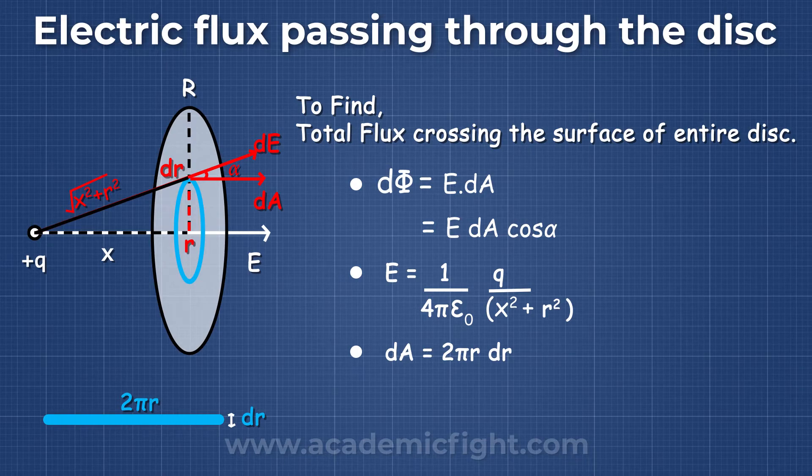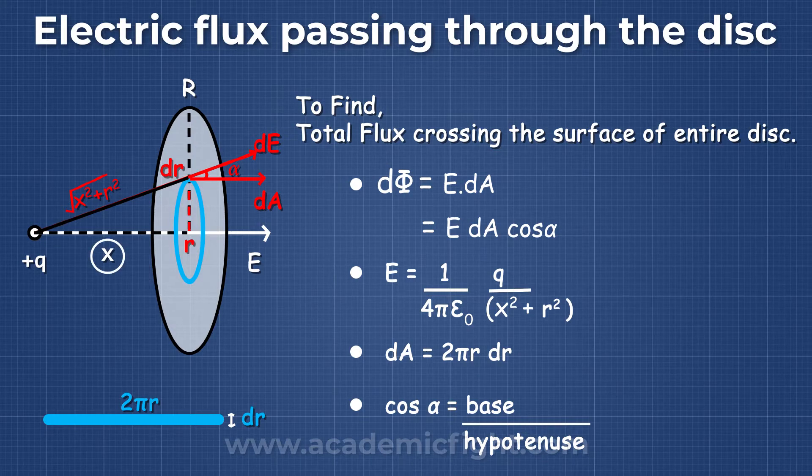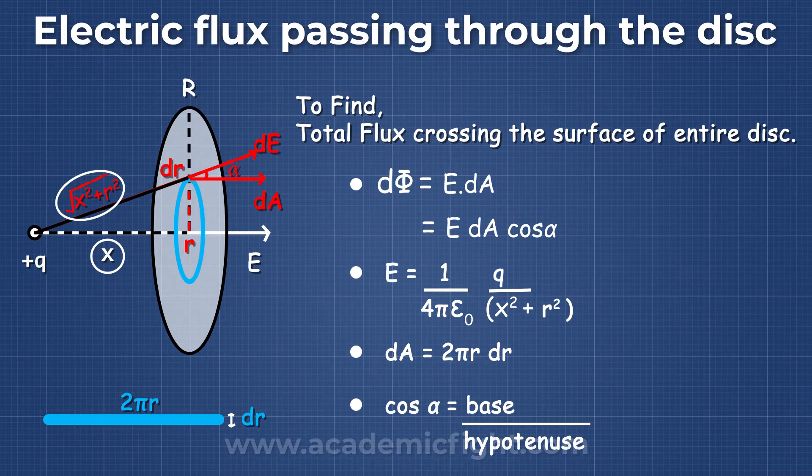And lastly cos alpha. Cos alpha is base by the hypotenuse. Base is x and hypotenuse is √(x² + r²). So cos alpha is x/√(x² + r²).